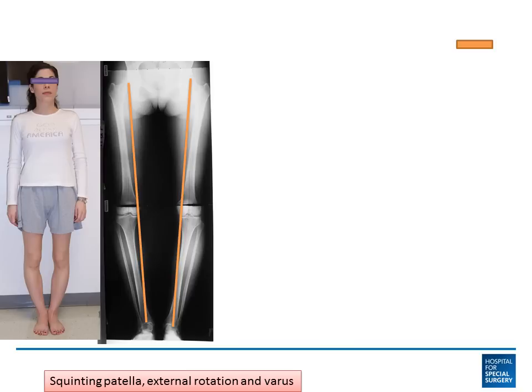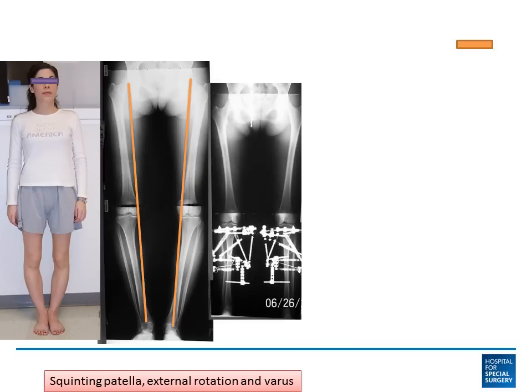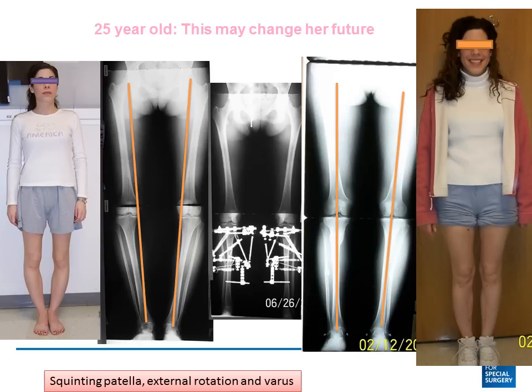Let's look at this young woman who presented with severe bilateral bow leg deformities, and also a rotational component, which makes the deformity more complicated. You can see that the lines are deviated to the inside part of the knee and she's overloading her knee and starting to develop pain. We used hexapod frames to do the deformity correction. This is what it looks like when it's all healed, and you can see how the realignment has been very successful with the lines going right through the center of the knee. This results in a situation that is both functionally and aesthetically advantageous — it will change her future, and she should really not develop arthritis.